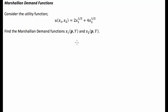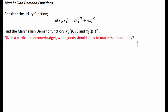G'day guys, today we're going to try and tackle a problem which lies at the very foundation of microeconomics, and that is utility maximisation. What we've got is a particular utility function based on the purchase of two goods, good X1 and X2. We've been asked to find the Marshallian demand functions X1 and X2.